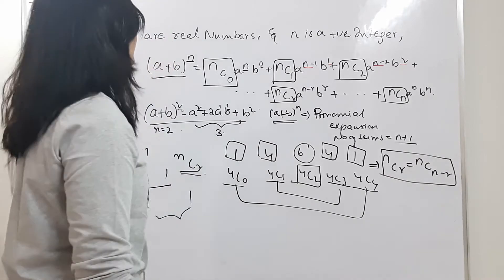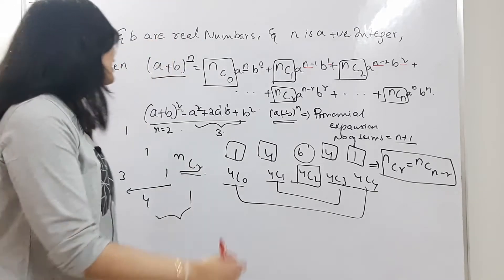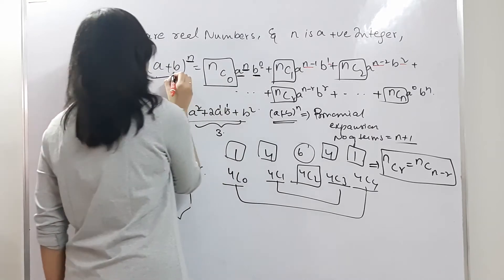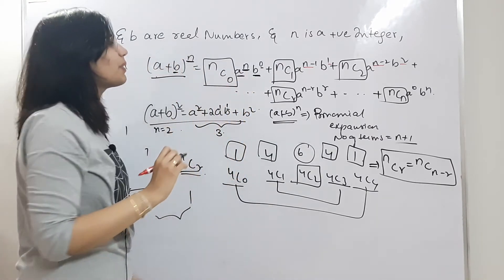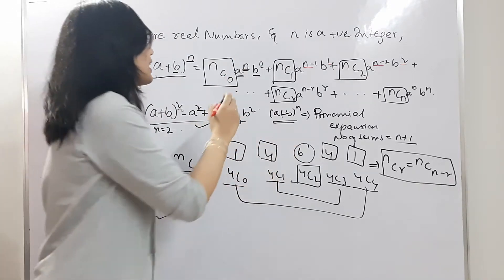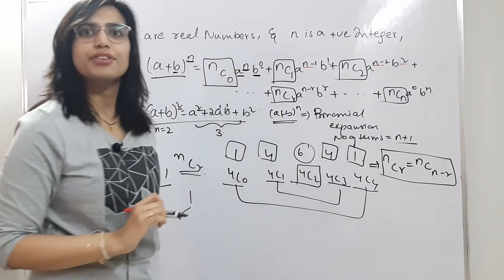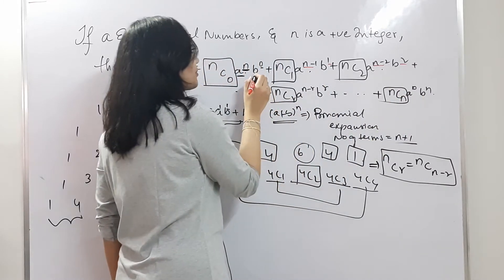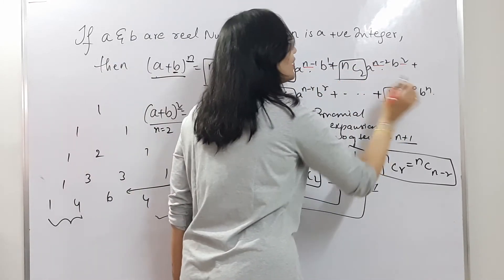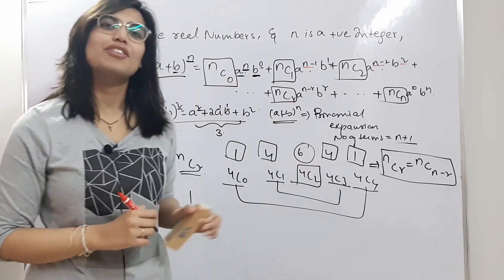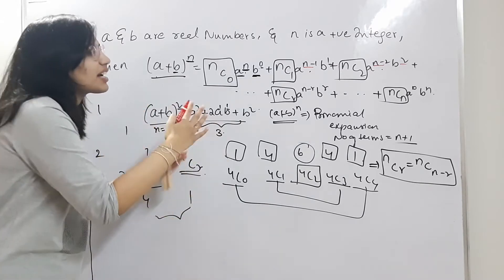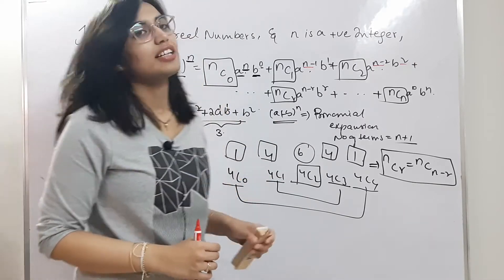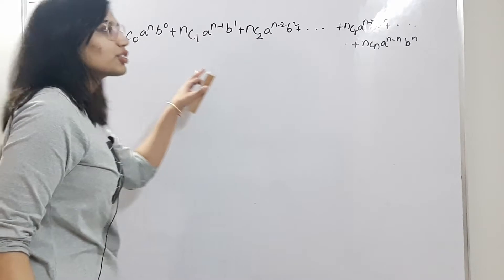The last observation is that the power of the variable a is reducing as you go from left to right — n, n-1, n-2, ..., 0 — while the power of the variable b is increasing: 0, 1, 2, ..., n. So the power of a is reducing and the power of b is increasing. All these observations we've seen in algebraic expansions are applicable to the binomial theorem as well.